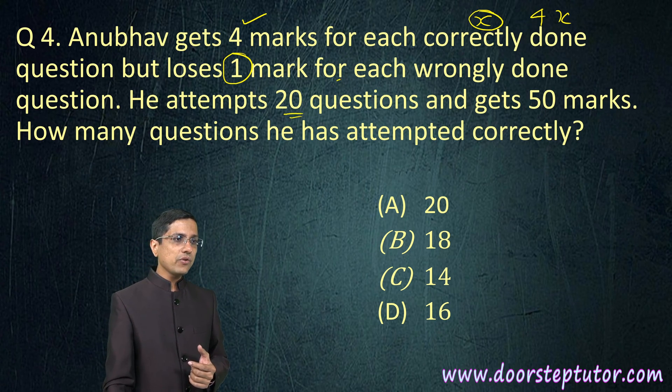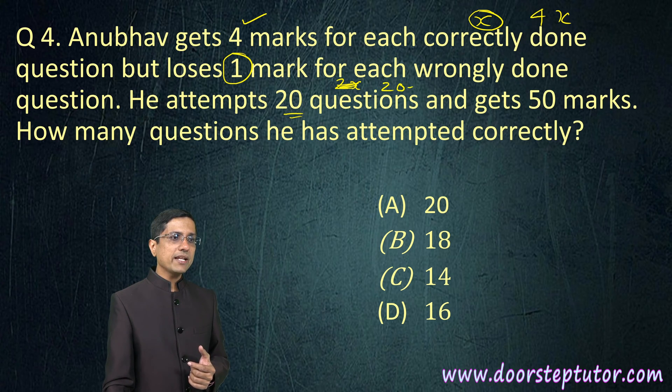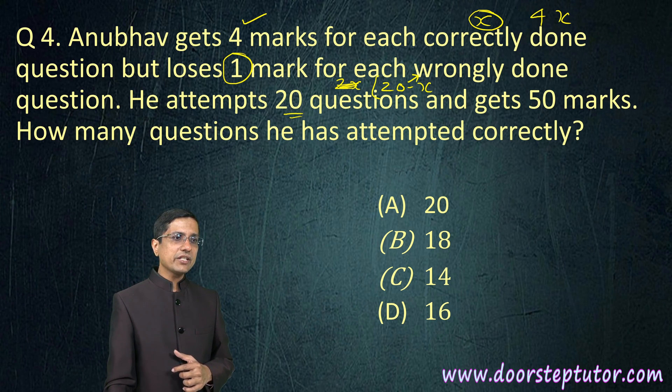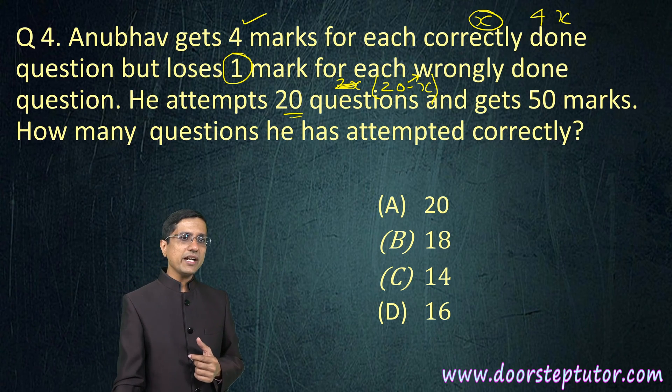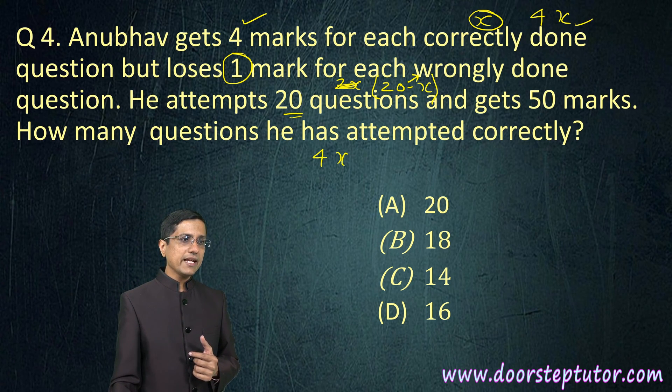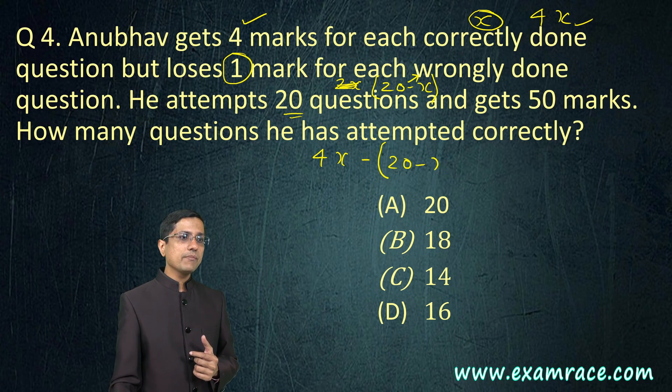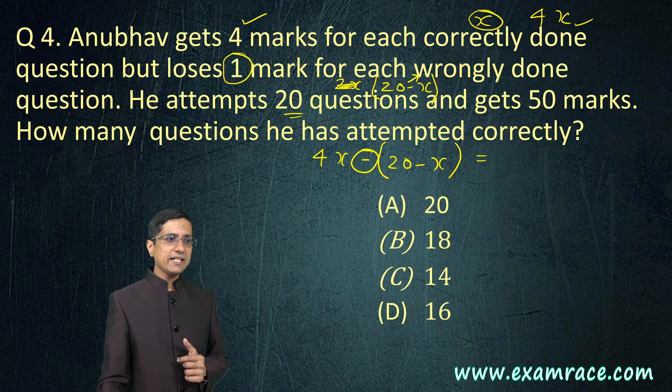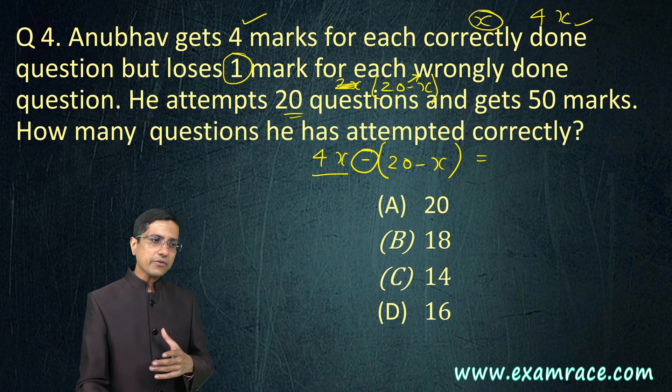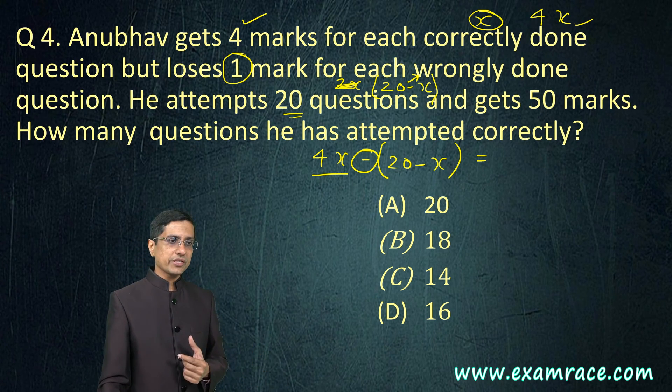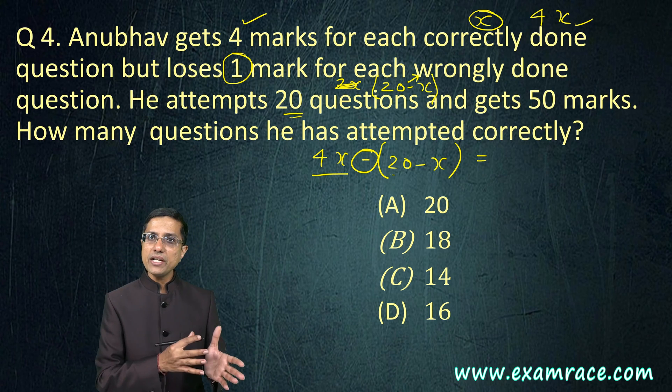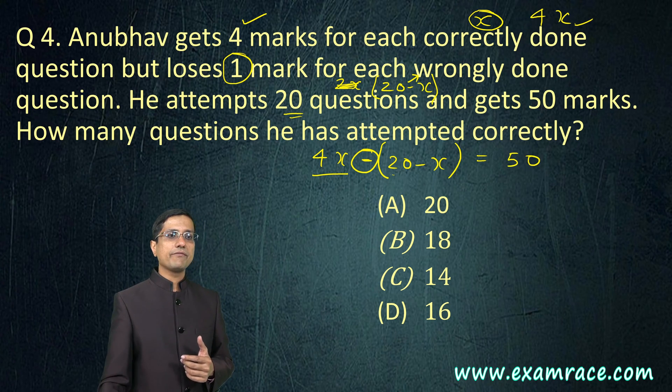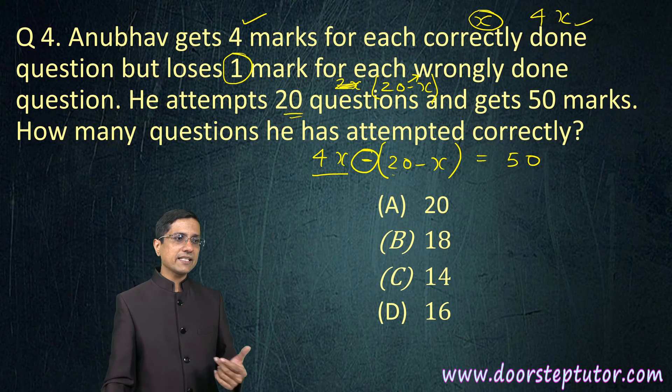Of course, X for correct. So, 20 minus X is the wrongly done number of incorrectly done questions. What is the number of marks deducted is 20 minus X. What is the marks he would get? He would get 4X for correct questions. And then, for each of these 20 minus X, these are the marks that would get deducted. And if we do this, then what are we being said? That this total number of marks - 4X means for each correct question, he got 4 marks. For each incorrect question, number of incorrect questions is 20 minus X. So, these marks have been reduced. One mark has been reduced for each of these. So, we put a subtraction here. And this comes out to be 50. This is a simple equation in X and we should be able to solve it.